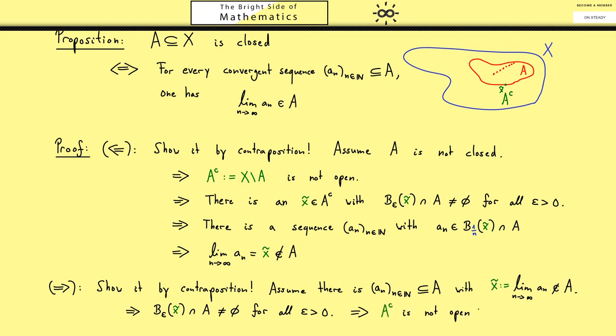However then by definition the set A itself is not a closed set. And as you can see this closes our proof here, the proposition is correct.